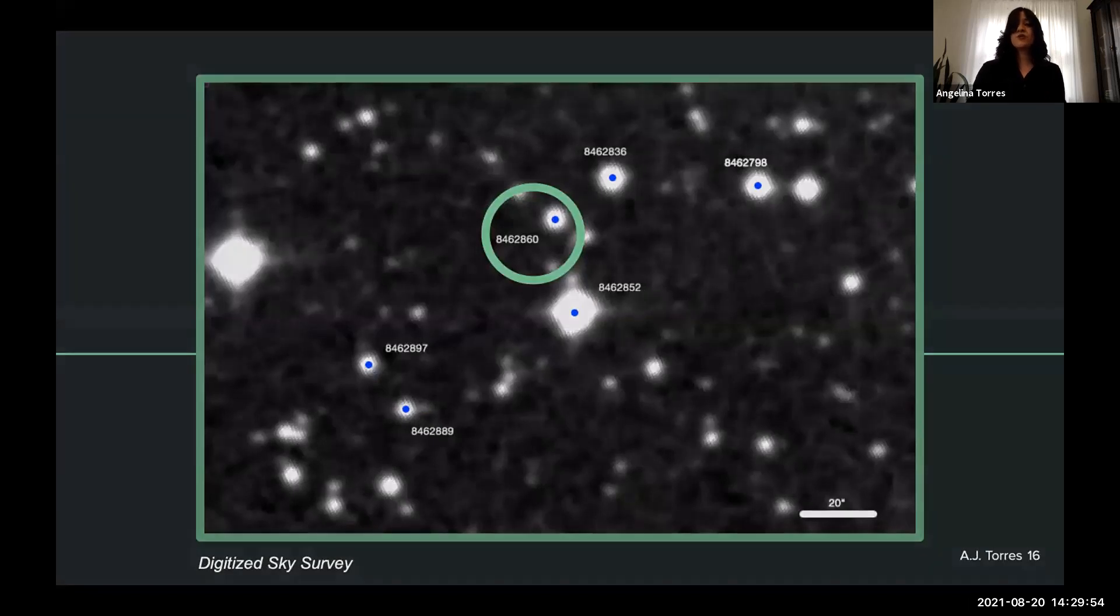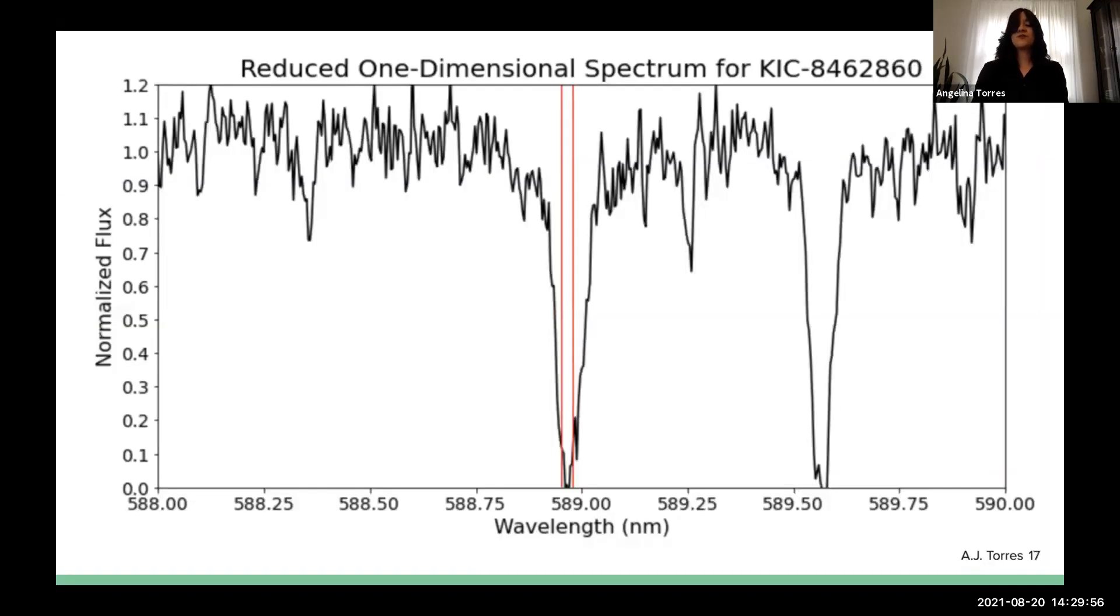Next, we're looking at 2860. It's the same thing as 2798. We have a singular absorption feature in the ballpark of these observed wavelengths, but we're not seeing that double peak that's characteristic to the cloud floating in front of Tabby's star.